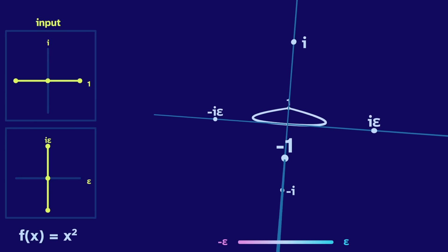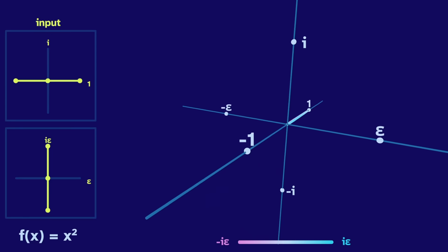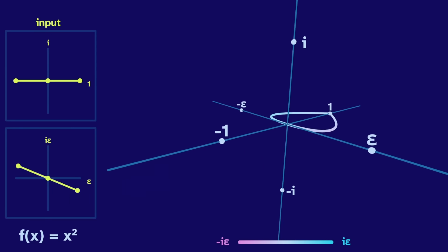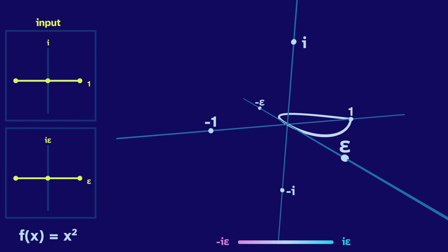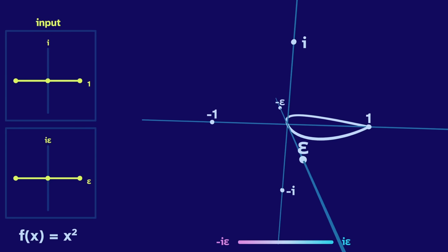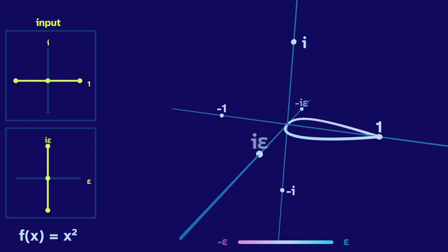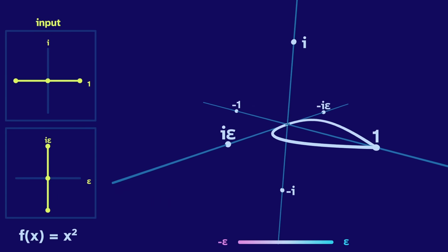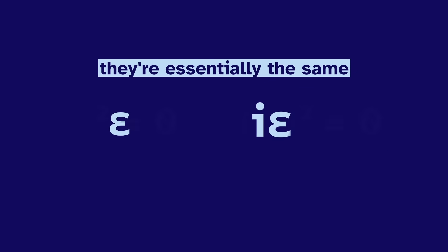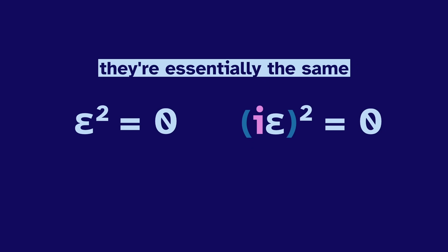And by doing this, we notice that swapping the graph's dimensions looks the same as rotating the input. The dual square with a dual axis is identical to the imagidual square with an imagidual axis. And this is because they're essentially the same. They both square to 0. The i is irrelevant. It can't square to negative 1 if it always has an epsilon chained to it that drags it down to 0.